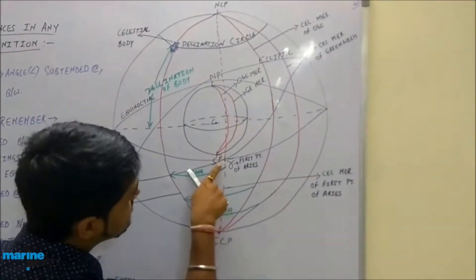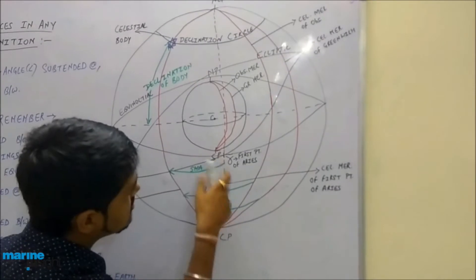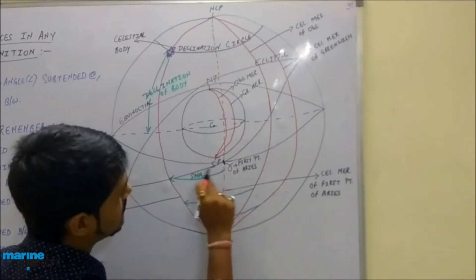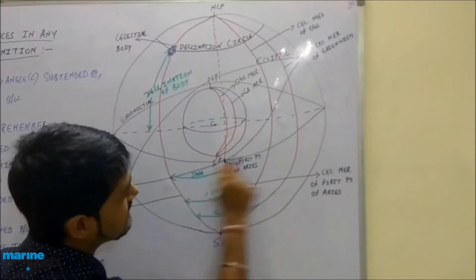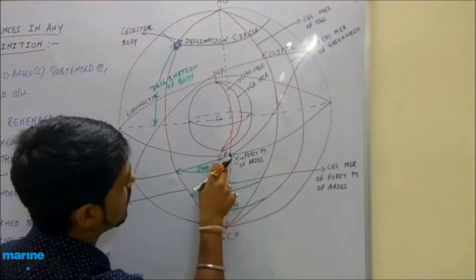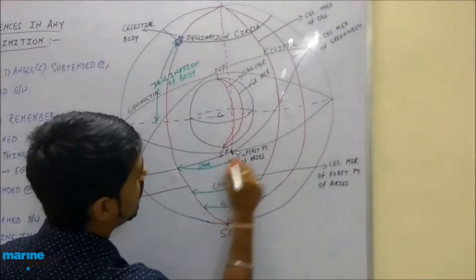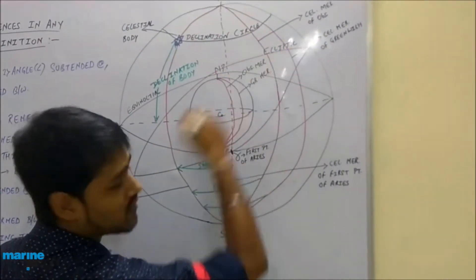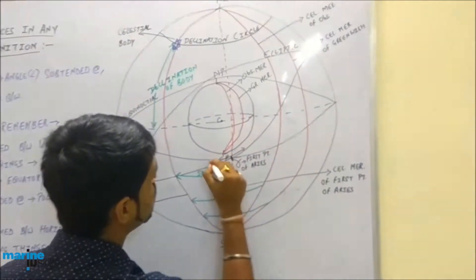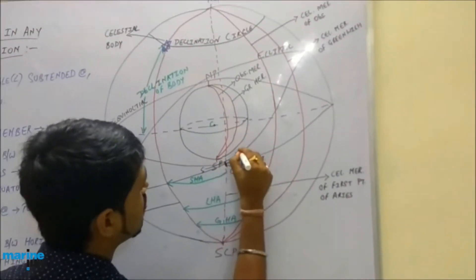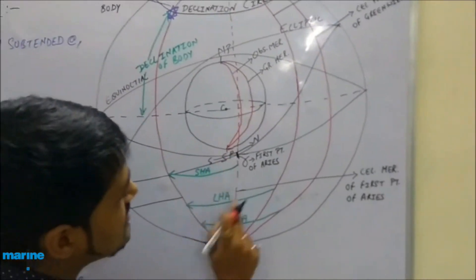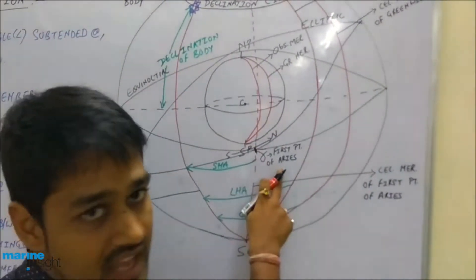This intersection point — the intersection of the ecliptic and the equinoctial — has two points basically, one below and one above. Since the sun apparently moves along this path, when it moves from south to north and crosses this intersection, this point is known as the first point of Aries.